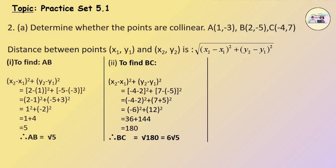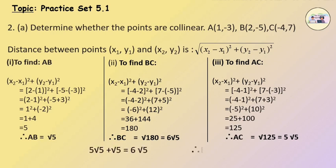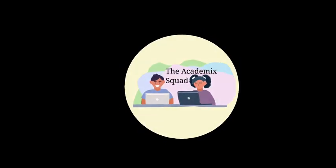To find AC: (x2 minus x1) squared plus (y2 minus y1) squared equals (minus 4 minus 1) squared plus (7 minus minus 3) squared, which equals minus 5 squared plus 10 squared, giving 25 plus 100 equals 125. Therefore, AC equals the square root of 125, which is 5 root 5. Therefore, 5 root 5 plus root 5 equals 6 root 5. Therefore, AC equals AB plus BC. Therefore, A, B, C are collinear points and B lies between points A and C. Thank you for watching the Academic Squad.